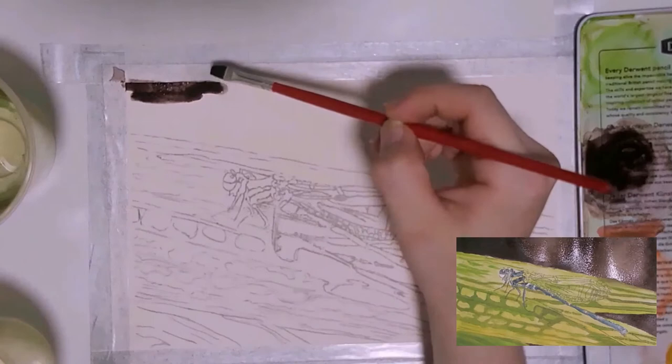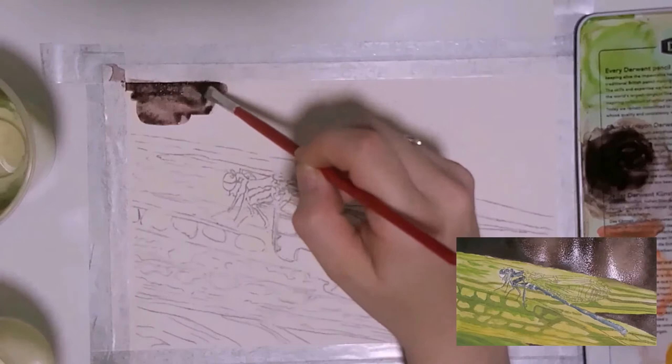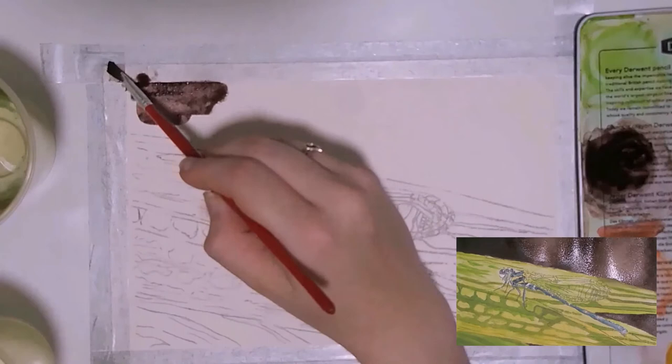Once I have finished mixing my colors I can start to paint. I'm going to start with the background. For this area I am adding a layer of brown to the whole section except for the areas of highlight. For the highlighted areas I add more water to our paint mixture to create a tint of our brown and then apply it to those areas.